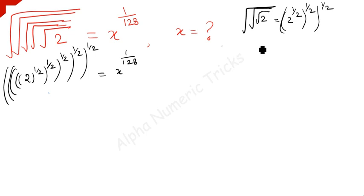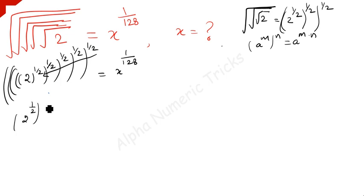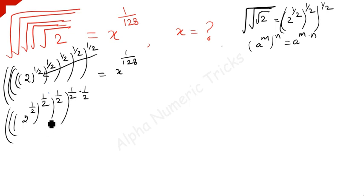But you know that a to the power m, whole to the power n, is equal to a to the power m times n. But here it is a tower problem — powers of a tower. So for this type of problem, you have to always start from top to bottom and multiply. So using this formula, for these two terms you have to apply: 2 to the power 1 over 2, whole to the power 1 over 2, whole to the power 1 over 2, whole to the power — this 1 over 2 times this 1 over 2.